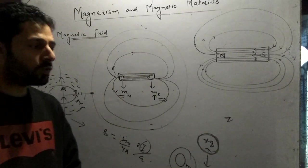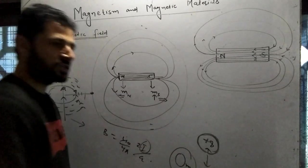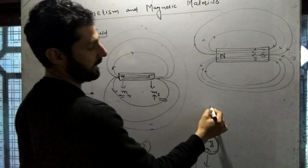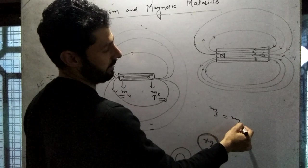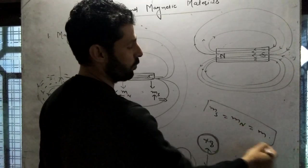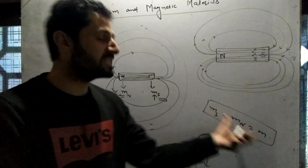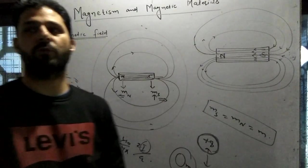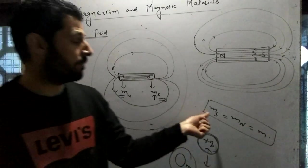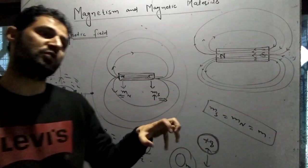For a magnetic dipole, the pole strength of the south pole m_S equals that of the north pole m_N, both equal to m. The pole strength plays the same role in magnetism that charge plays in electrostatics.